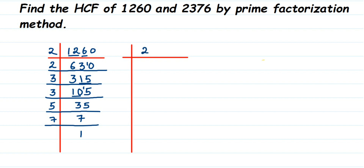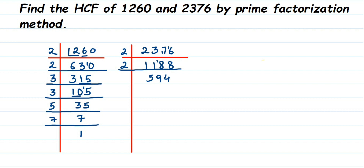Now the second number, 2376, is even so we start with 2. Dividing step by step: 2376 ÷ 2 = 1188, then 1188 ÷ 2 = 594, then 594 ÷ 2 = 297. Working through the long division carefully at each step, we arrive at 297, which is an odd number.